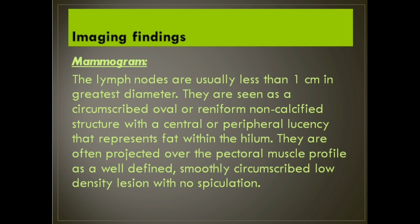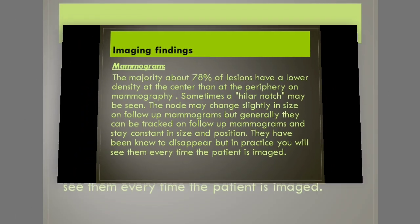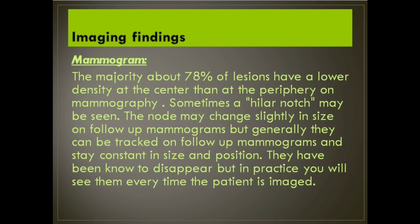They are often projected over the pectoral muscle profile as a well-defined, smoothly circumscribed low-density lesion with no spiculation. The majority — about 78% of lesions — have a lower density at the center than at the periphery on mammography. Sometimes a hilar notch may be seen.